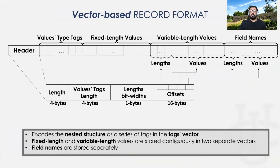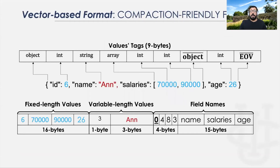The main objective of the vector-based format is to make the schema inference and the compaction process as efficient as possible. As the name suggests, we store the record as vectors. The vector-based format has four main vectors: values-tags vectors, fixed-length and variable-length vectors, and finally the field names vector. This is an example of a record in the vector-based format. We see the record in raw format in the middle and the tags vector above. The values and the field names vectors are below.